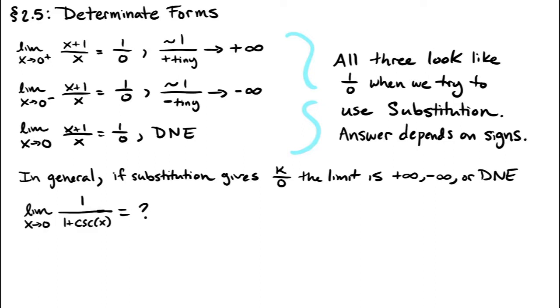What about the limit of 1 over 1 plus cosecant as x goes to 0? When x goes to 0 from the right, cosecant, which is by definition 1 over sine, is going to plus infinity. So this ratio is roughly 1 on top and something giant and positive on the bottom, so it's approaching 0. What's going to happen when x approaches 0 from the left?